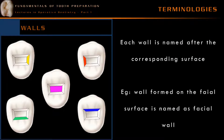Throughout this lecture series, I will be mentioning all the walls which are parallel to the long axis of the tooth, and will use the word floor or seat to represent all surfaces which are perpendicular to the long axis of the tooth. So for example: a pulpal floor, a gingival seat, an axial wall — we will see each and every technical word in the coming part of this lecture.